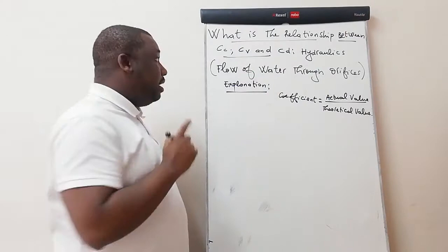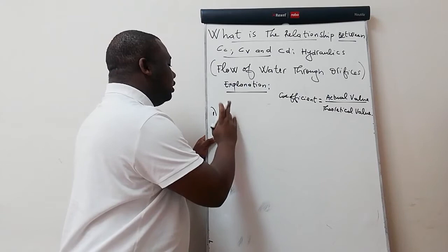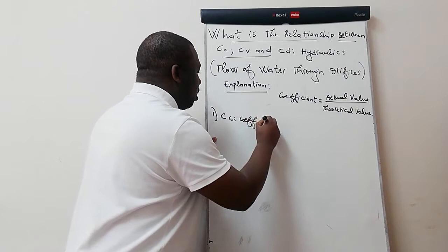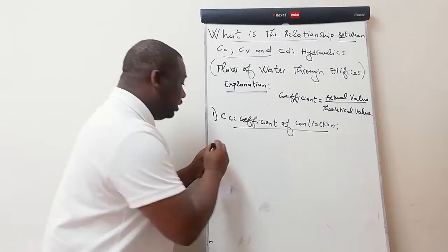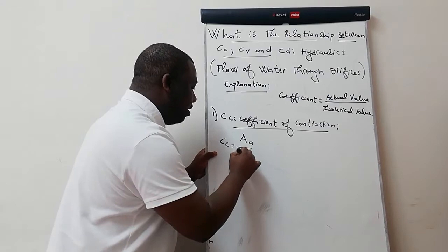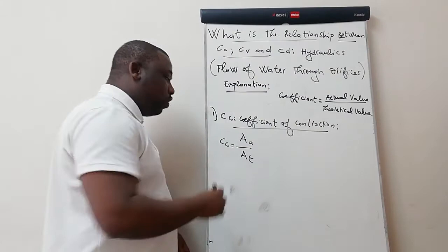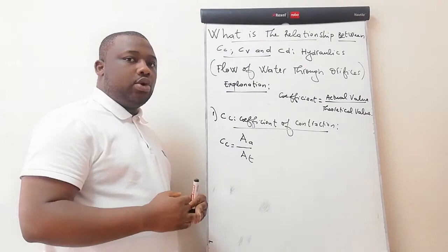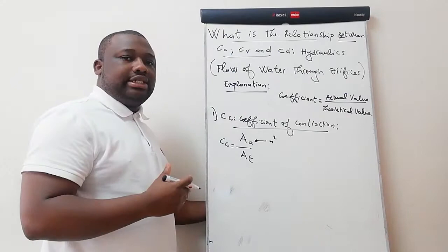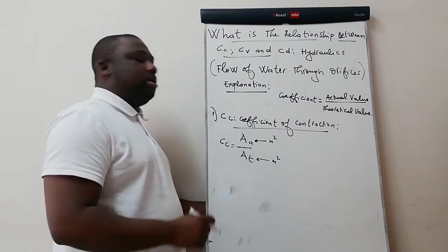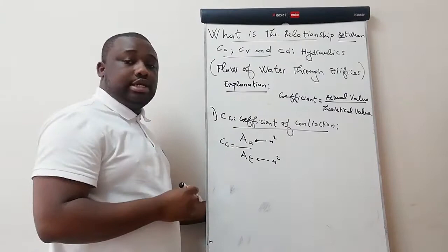Let's start by the first one: CC, which is your coefficient of contraction. By definition, CC is equal to AA over AT — that is, the actual area over the theoretical area. AA is the actual area of the jet in square meters, and AT is the theoretical area of the jet in square meters as well. The units simplify, so CC won't have a unit — it's a coefficient.